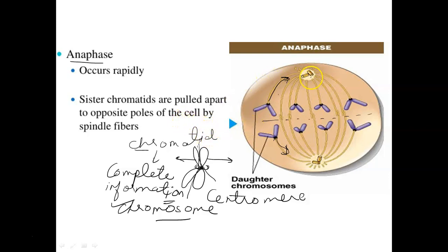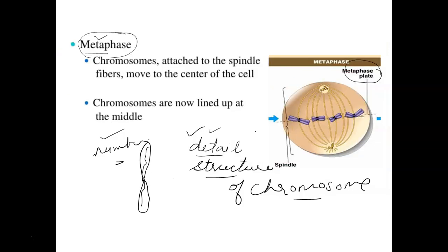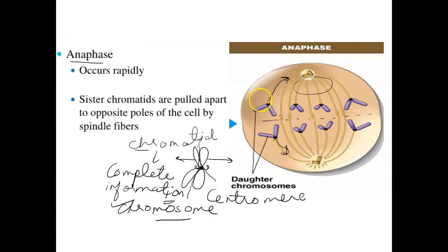So four chromatids reach one pole and four reach the other. Looking at the previous slide, there were four chromosomes where DNA content was double but chromosome number was the same. Now, because the centromere divides, each chromatid behaves as a chromosome with complete information. Four chromosomes — chromatid and chromosome are the same now — reach one pole and four reach the other.